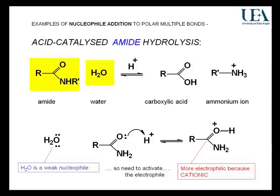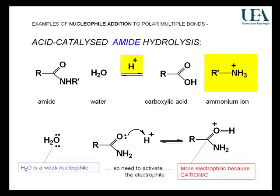We're starting with the amide. We're using an excess of water, the same type of equilibrium process, to produce the carboxylic acid. The key difference in this balanced equation is the ammonium ion. I've used a stoichiometric amount of acid to end up not with an amine, but an ammonium ion in the hydrolysis process.